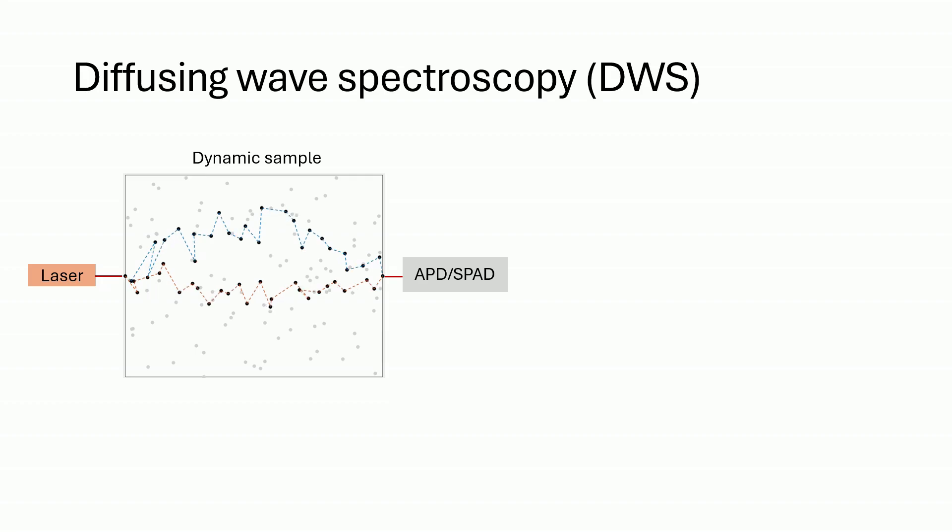Here, a laser is shown into a sample and detected on the other side. And here I show two photon or light paths for visualization. The black dots along the path are dynamic scatterers undergoing Brownian motion, which is a random walk process described by the following distribution.